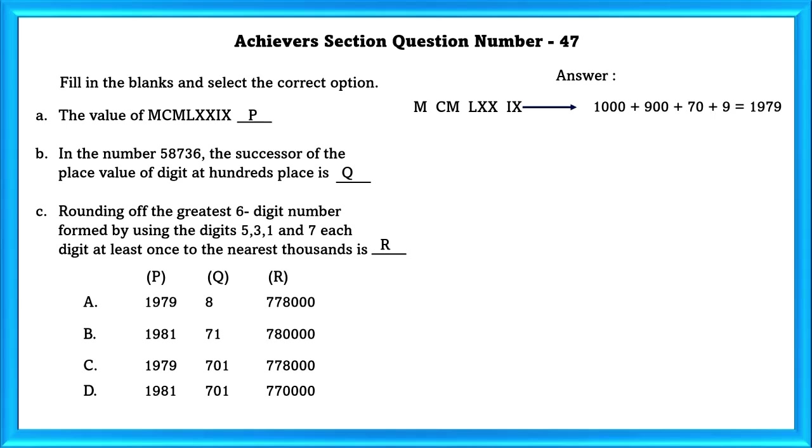M is equal to 1000, CM is equal to 900, LXX is equal to 70, IX is equal to 9, which gives us a total of 1979.